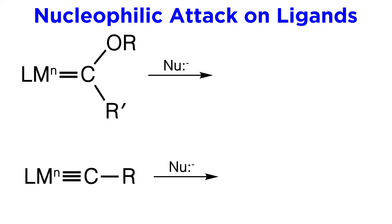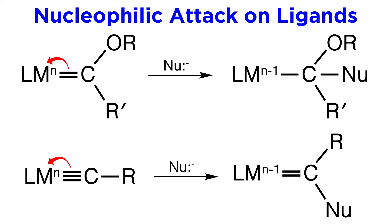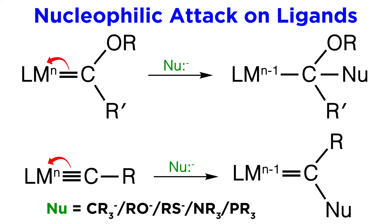We can see how this works on carbene and carbyne metal complexes as well. This is actually a bit more straightforward, as the nucleophile will simply attack the carbon and a pi bond will be pushed onto the metal, resulting in a lower oxidation state for the metal. For this type of reaction, common nucleophiles will include carbanions, alkoxides, thiolates, amines, and phosphines.